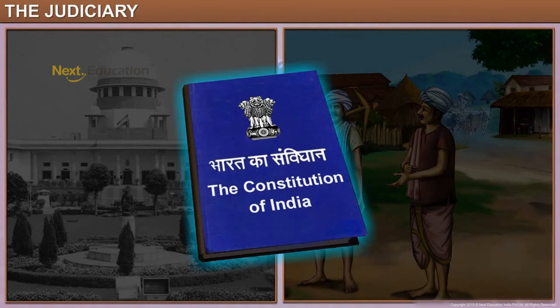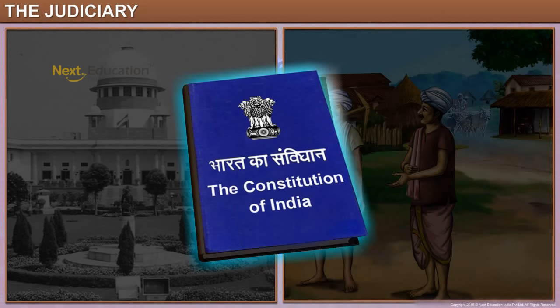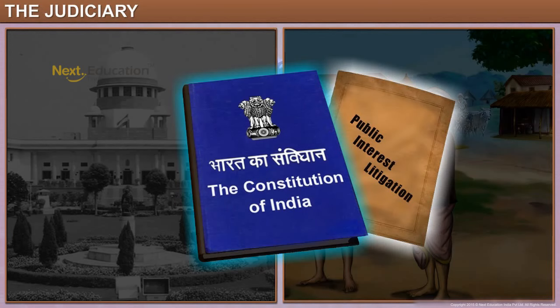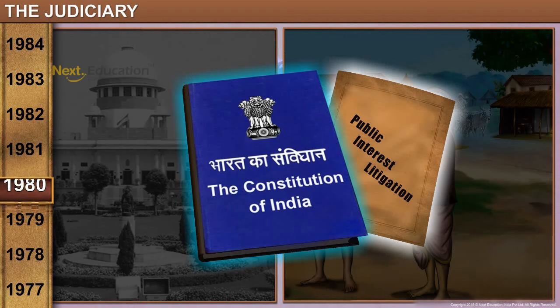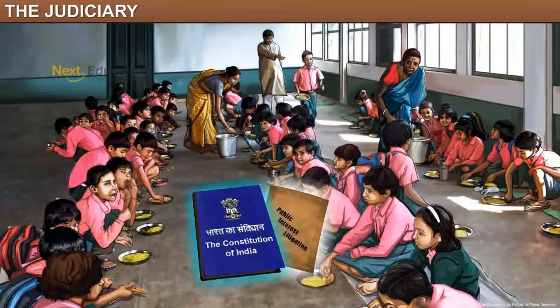However, to combat this situation and increase the accessibility to justice, the Supreme Court introduced the Public Interest Litigation or PIL in the 1980s. This enabled a person who needed justice to file a PIL directly to the High Court or Supreme Court. The midday meal that children get in government schools is a result of a PIL filed.